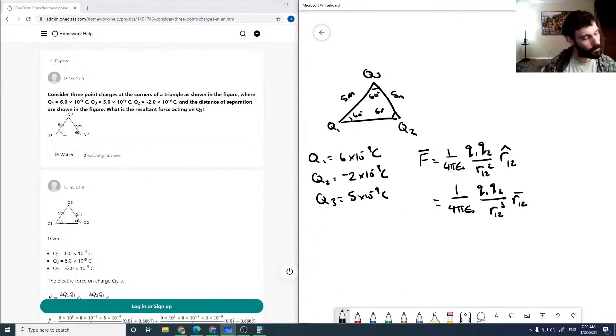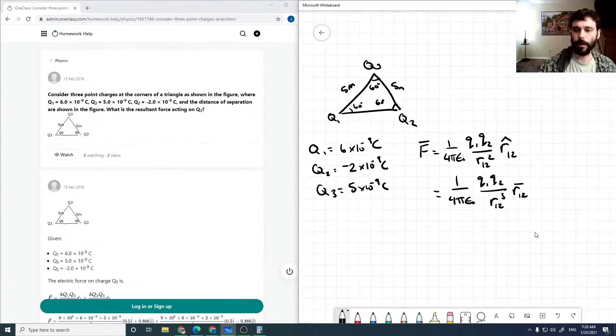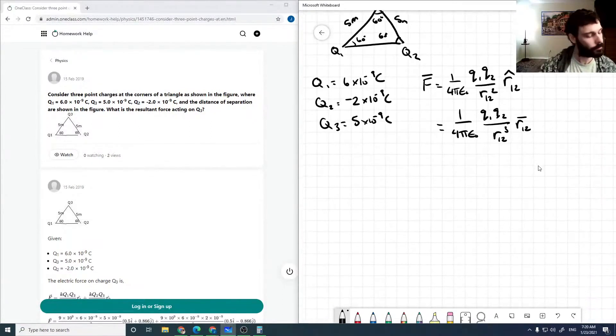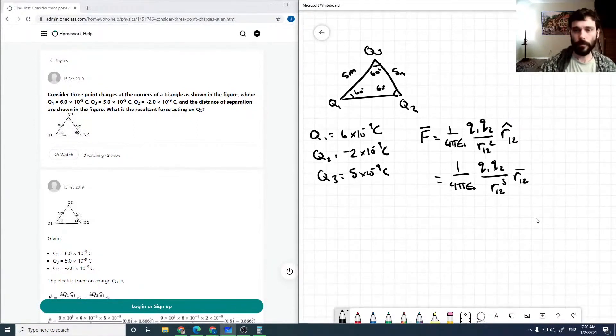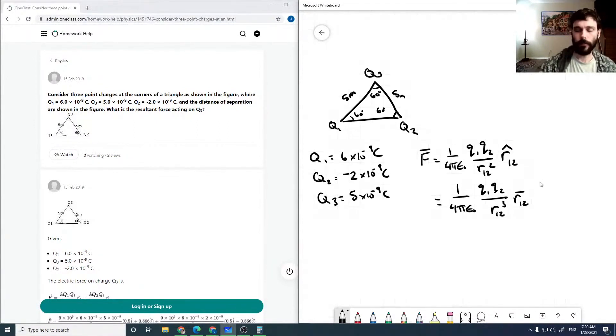To solve for the resultant force, we need the individual forces, and to do that, we need the vectors. Let's define an axis system where this is our X and this is our Y, and I'm going to define each of the position vectors.